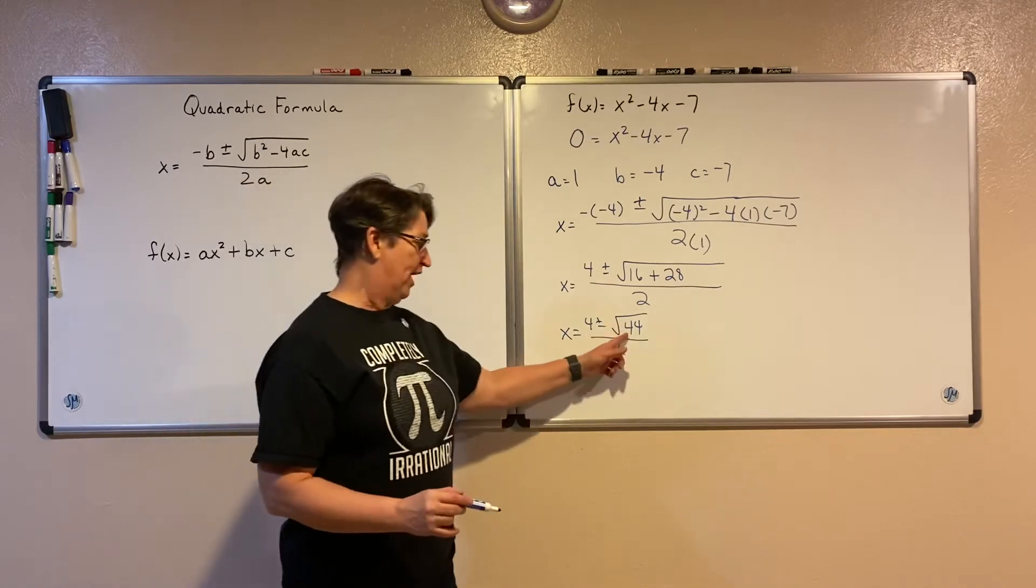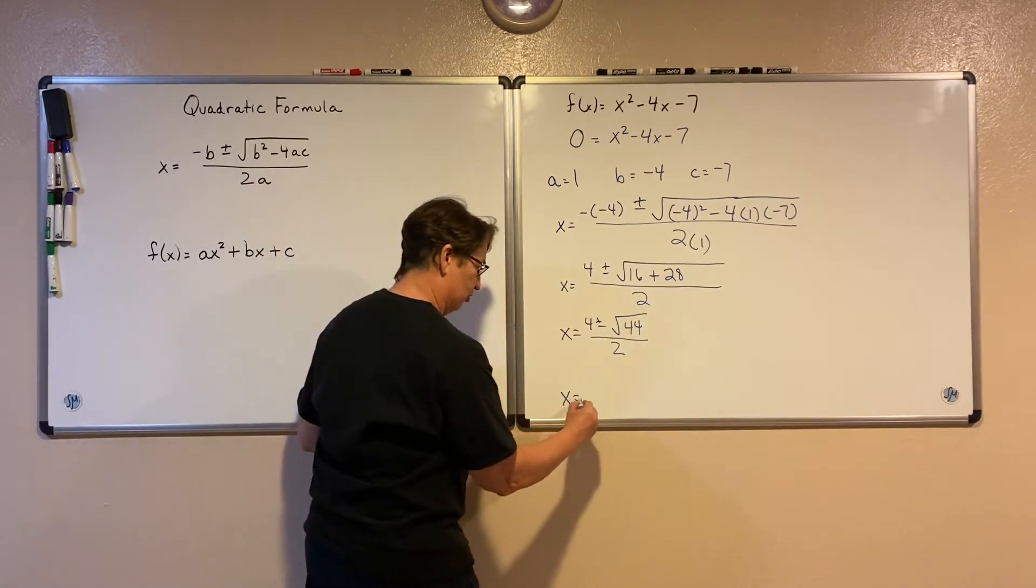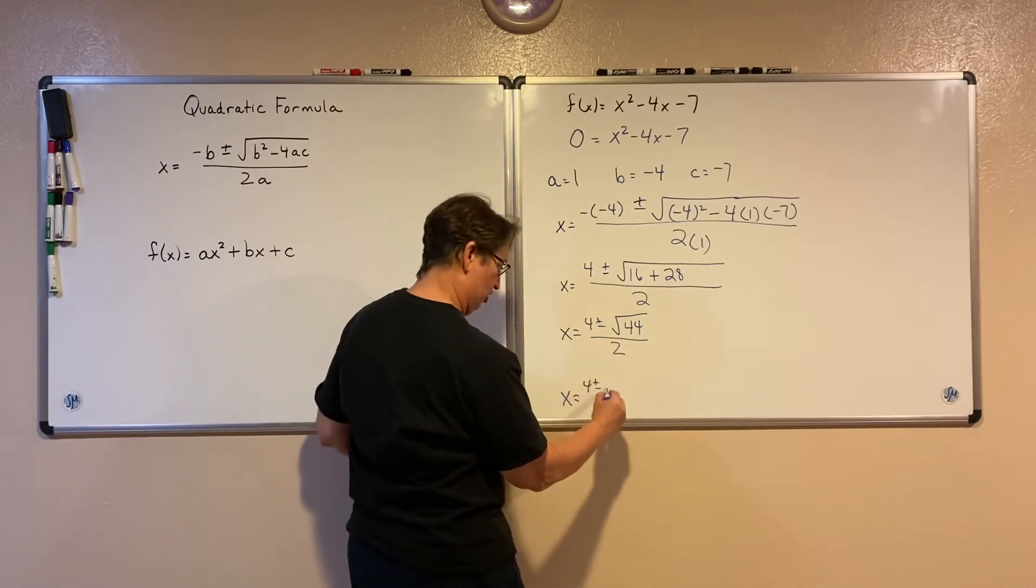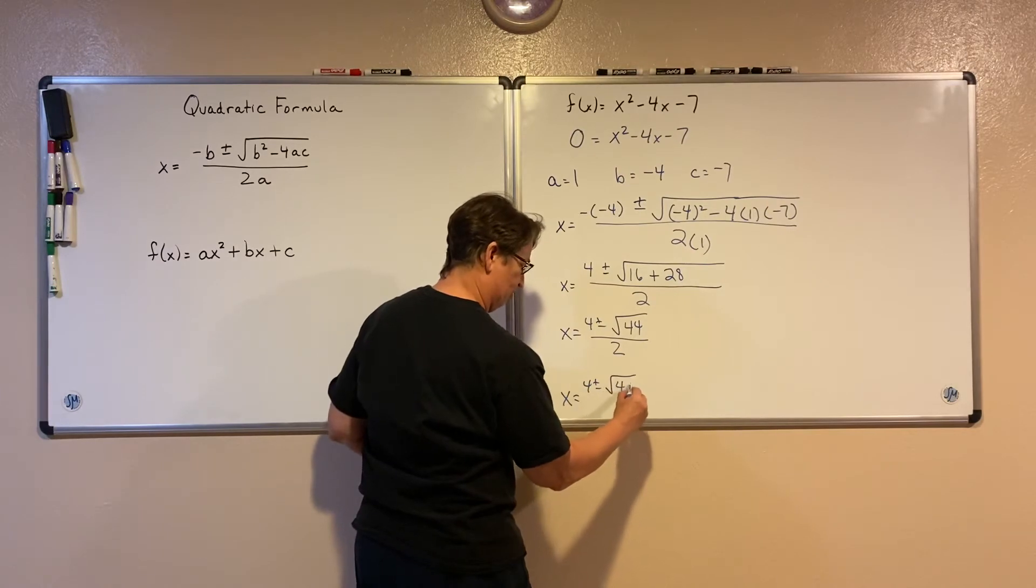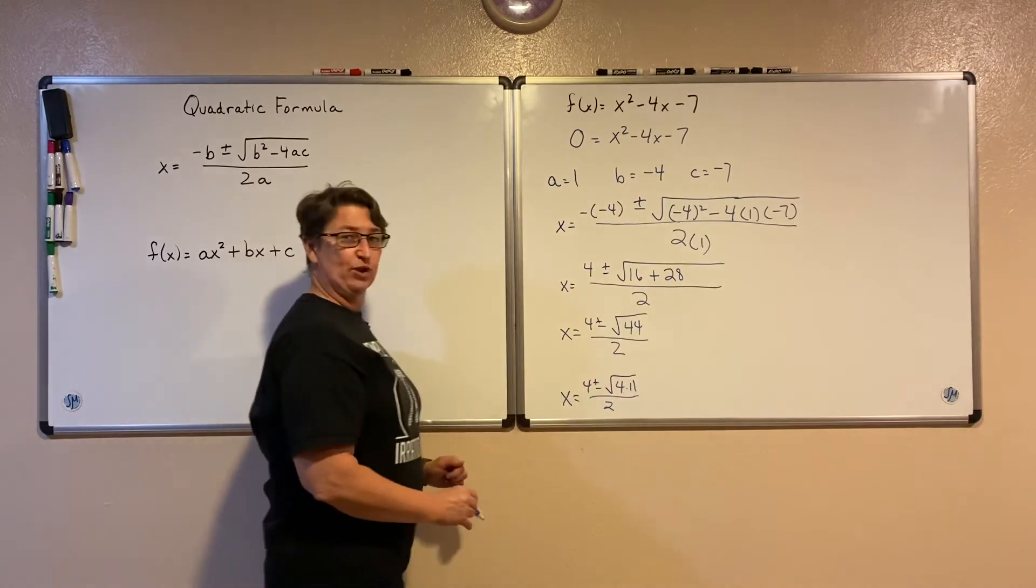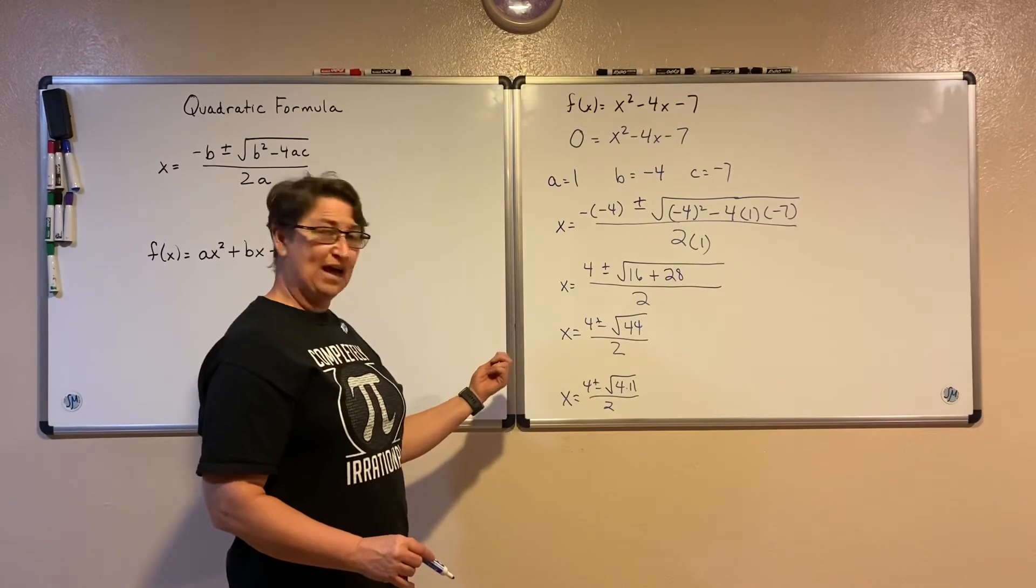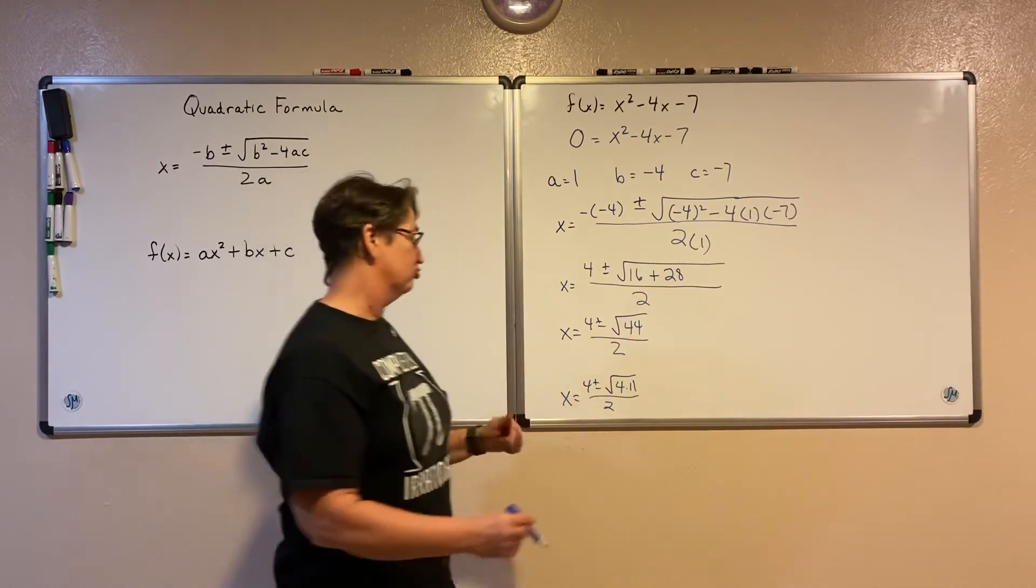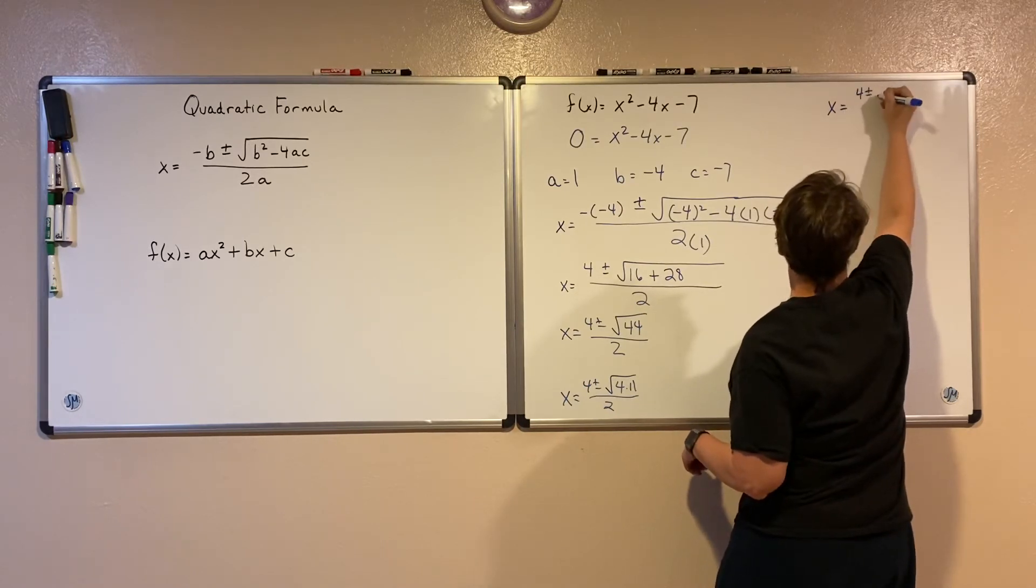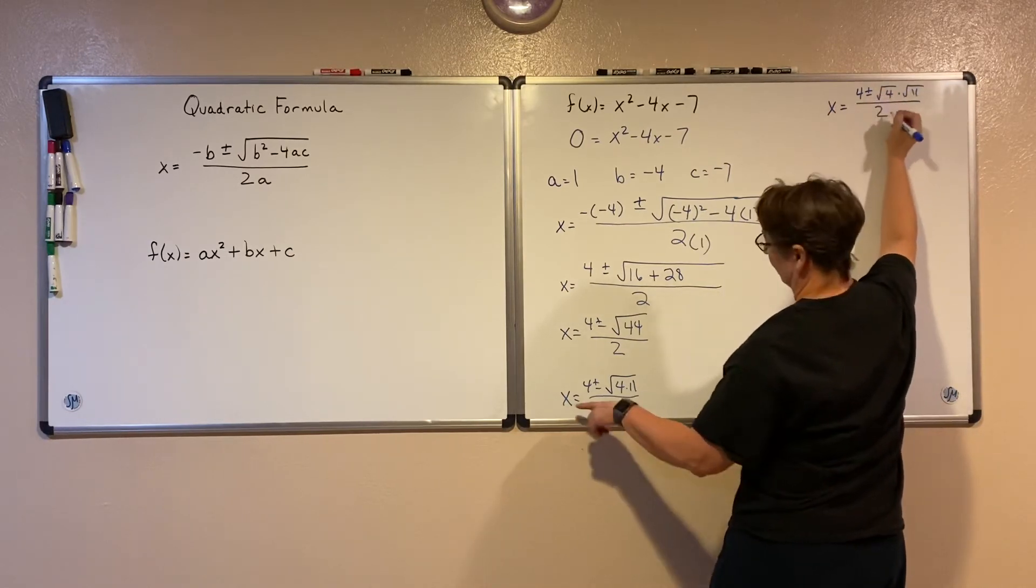I'm going to simplify under that radical. Remember when we simplify under a radical, we look for a perfect square. Here I see the perfect square of 4 goes into that 44. So I have the square root of 4 times 11 is 44. I can rewrite this as the square root of 4 times the square root of 11. So I can rewrite that as 4 plus or minus the square root of 4 times the square root of 11, still all over that 2.